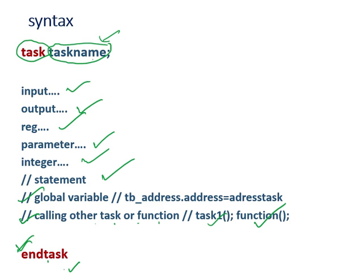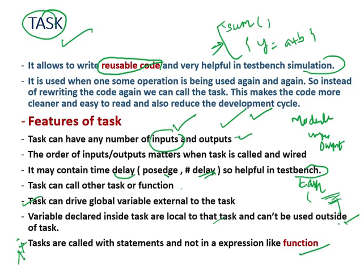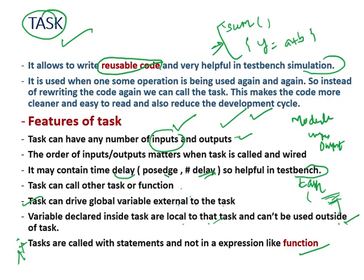Here is an example. This is a module with inputs a, b and outputs x, y. A task called 'convert' is declared. It has an input port declared inside it. Variables declared inside the task — 'a_in' and 'a_out' — are local variables. Variables outside the task — a, b, x, y — are global variables.